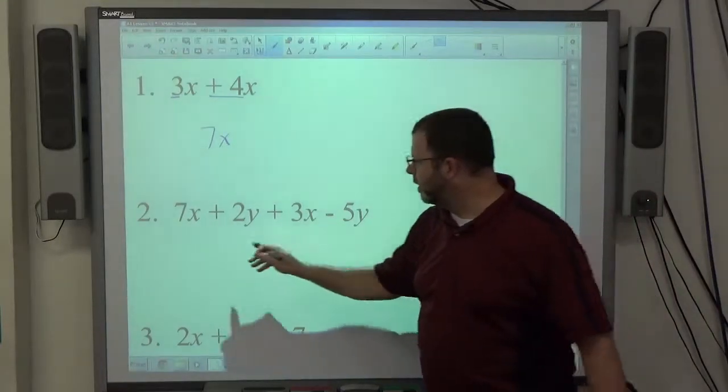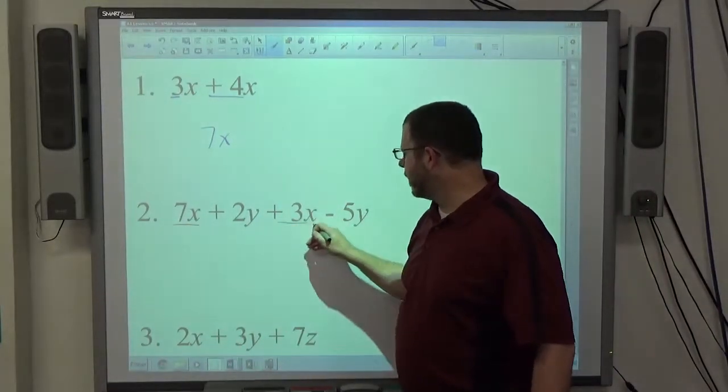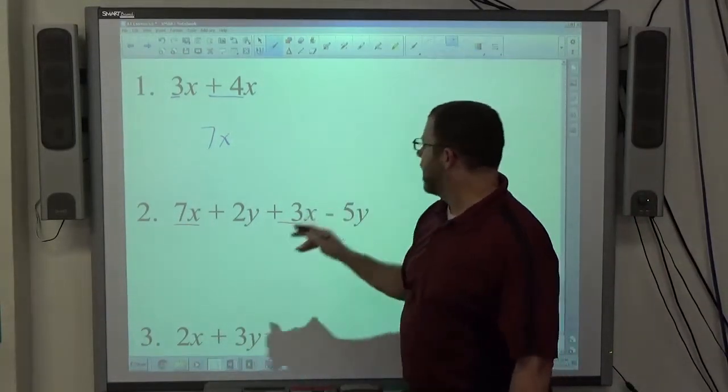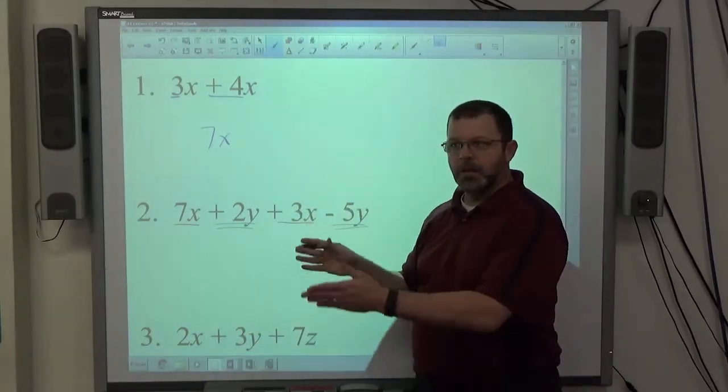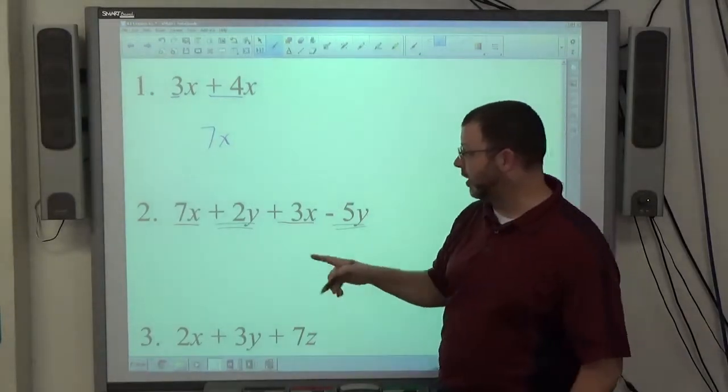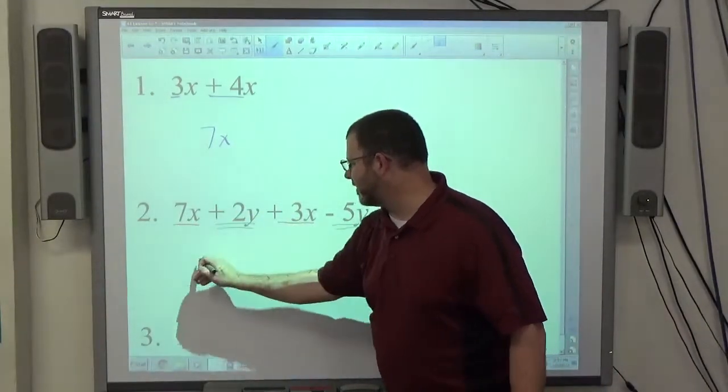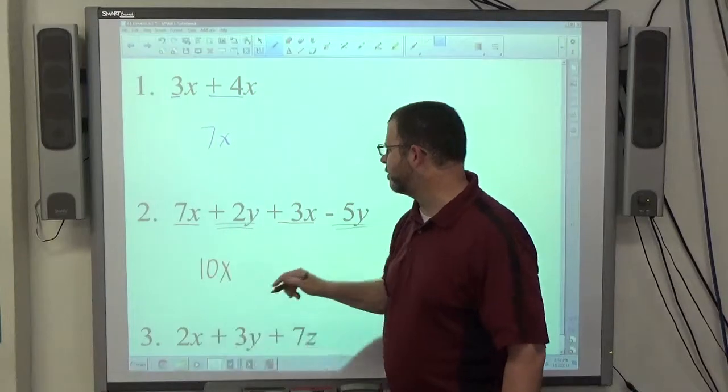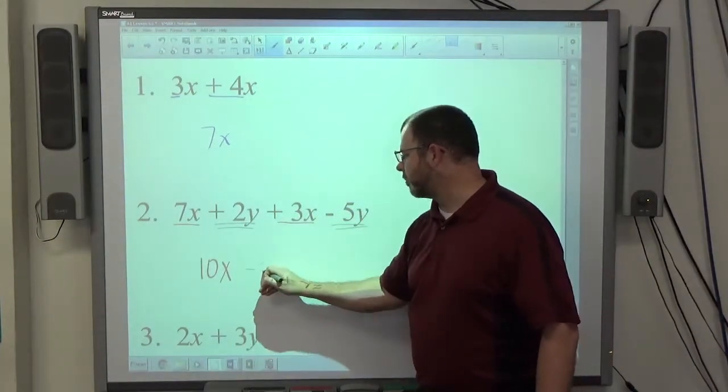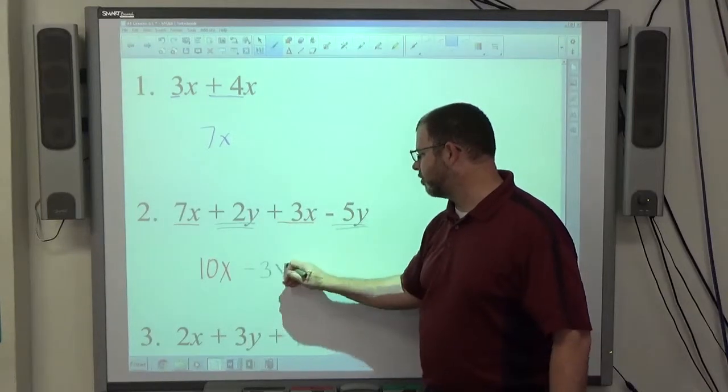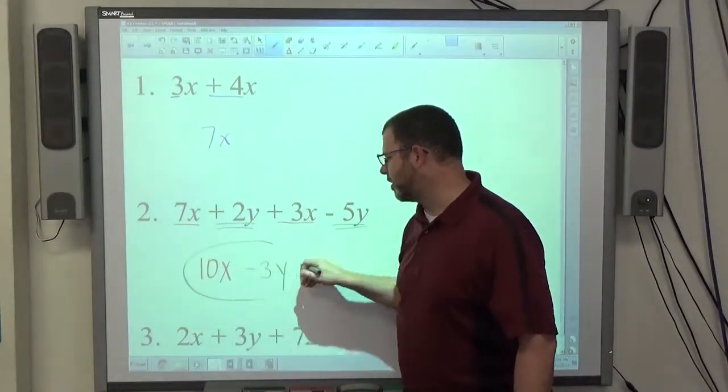If you look at the second one, we have 7x plus 3x and we have plus 2y and we have minus 5y. So 7x and 3x both have x to the first power so addition to those is legal. 7 plus 3 makes 10, what made them the same was x to the first. 2 minus 5 is negative 3, what made them the same was y to the first. So 10x minus 3y is the best I can do to that one.